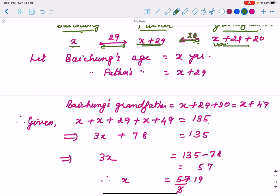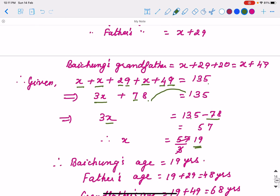We simplify x plus x plus x, that is 3x. 29 plus 49 is 78. So 3x plus 78 equals 135. If I take 78 to the other side, that plus sign will change to minus. 135 minus 78 equals 57. 3x equals 57. If you reduce it to the smallest, x equals 19.